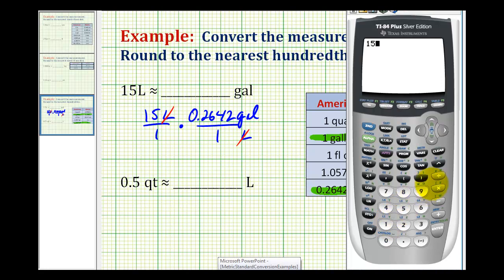So we have 15 times 0.2642, and our directions ask us to round to the nearest hundredths, so this will be approximately 3.96 gallons.